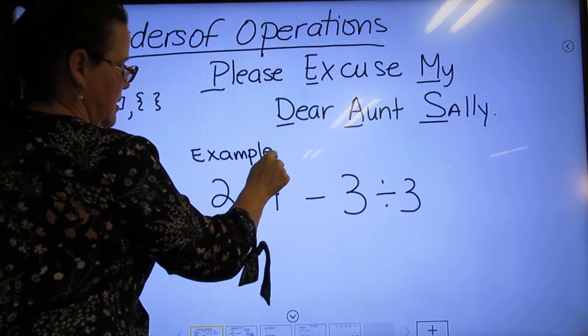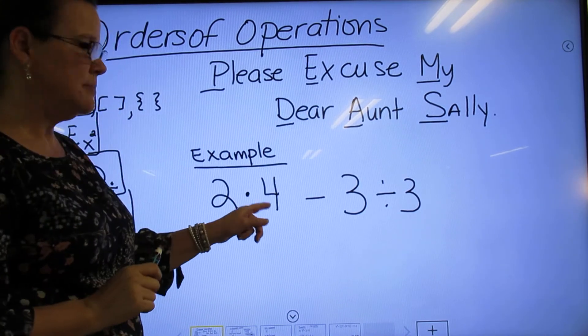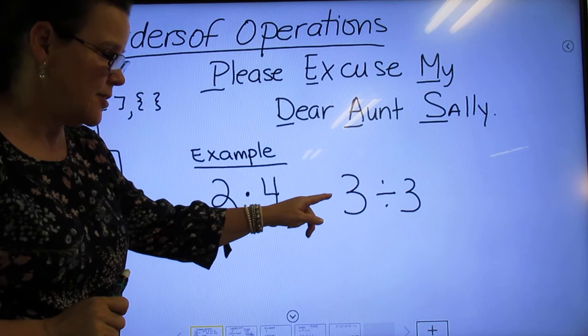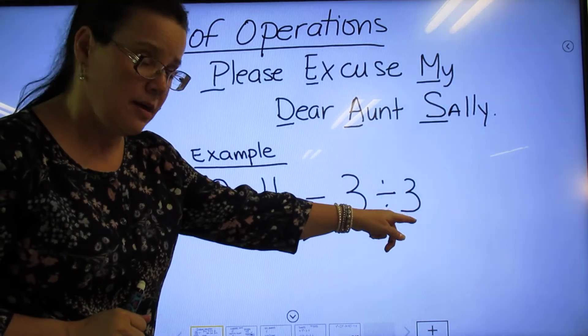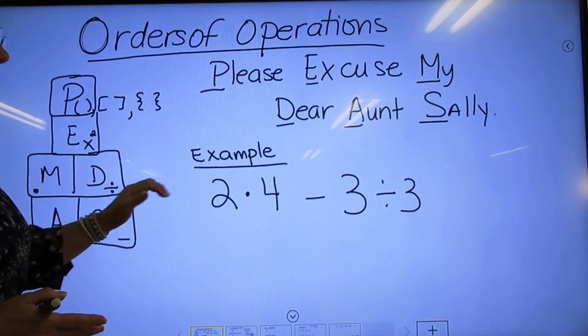So our example: 2×4-3÷3. Well, multiplication and division come before subtraction, and we have both, so we've got to do both of these first and then subtract.